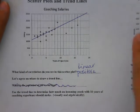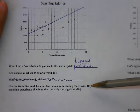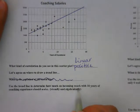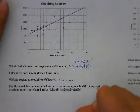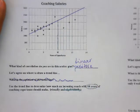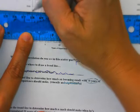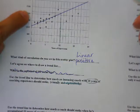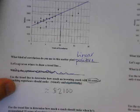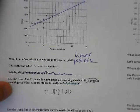We're not going to be changing the trend line — we'll do that next year. Use the trend line to determine how much an individual coach with 10 years of teaching experience would make, visually. All of ours is visual. So if I'm looking at 10 years of experience, I draw up to my trend line, draw across, and we can say about $2,100 for their salary.